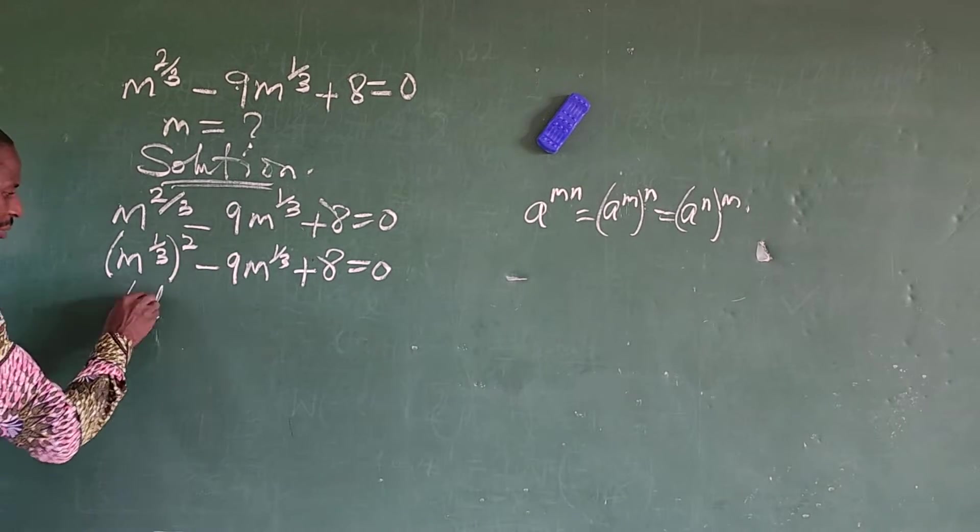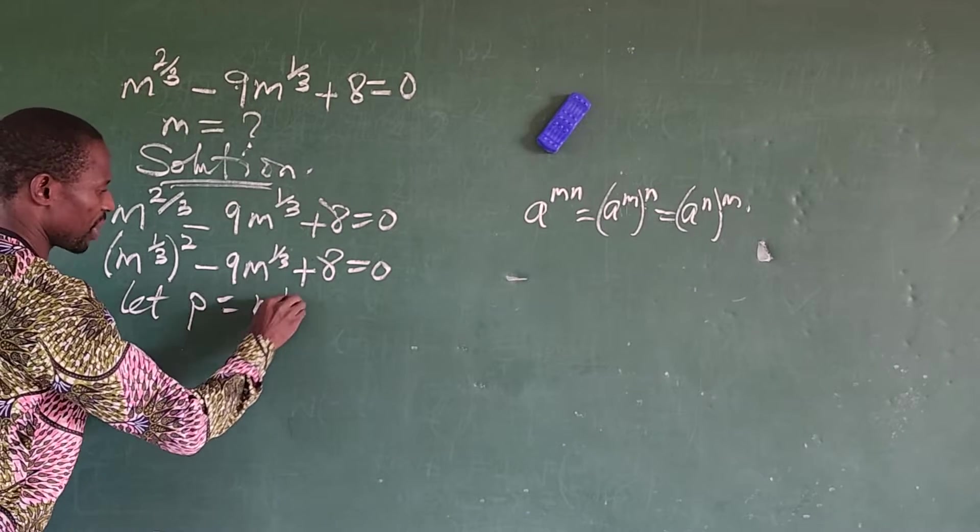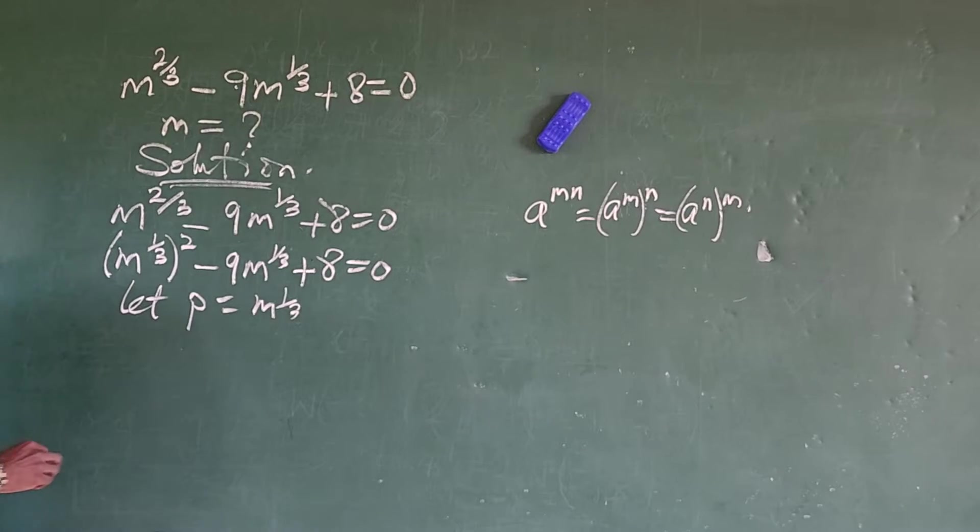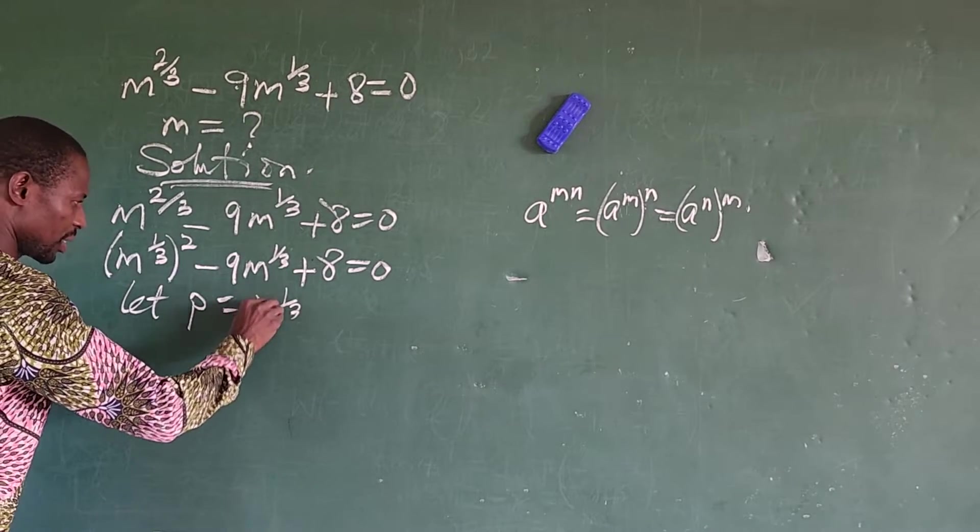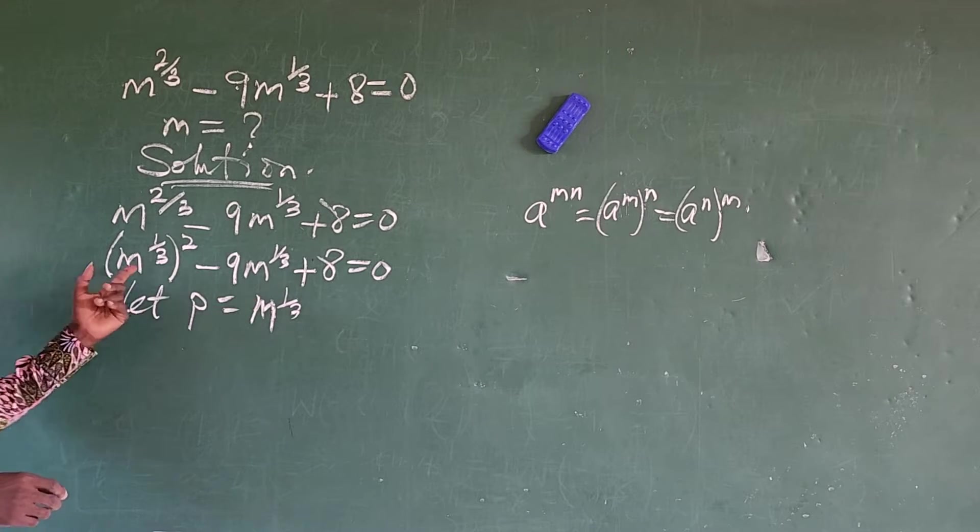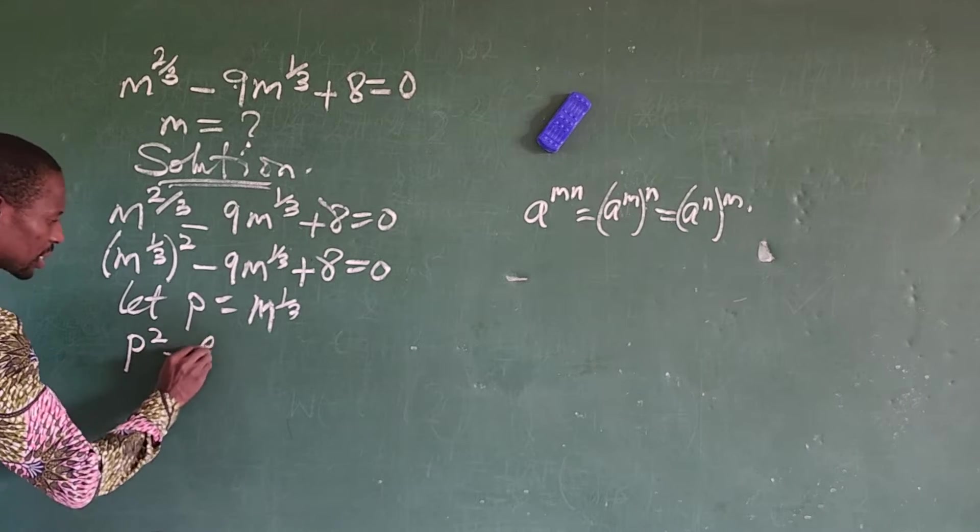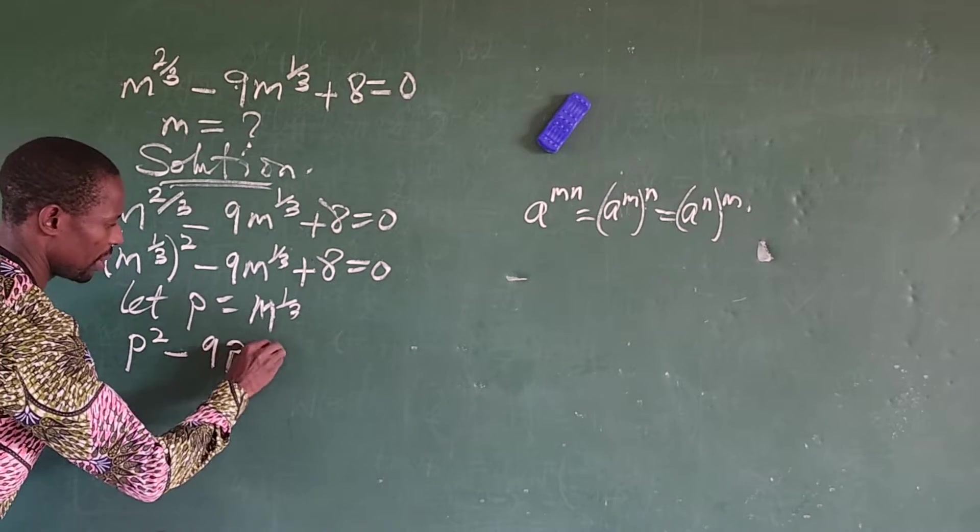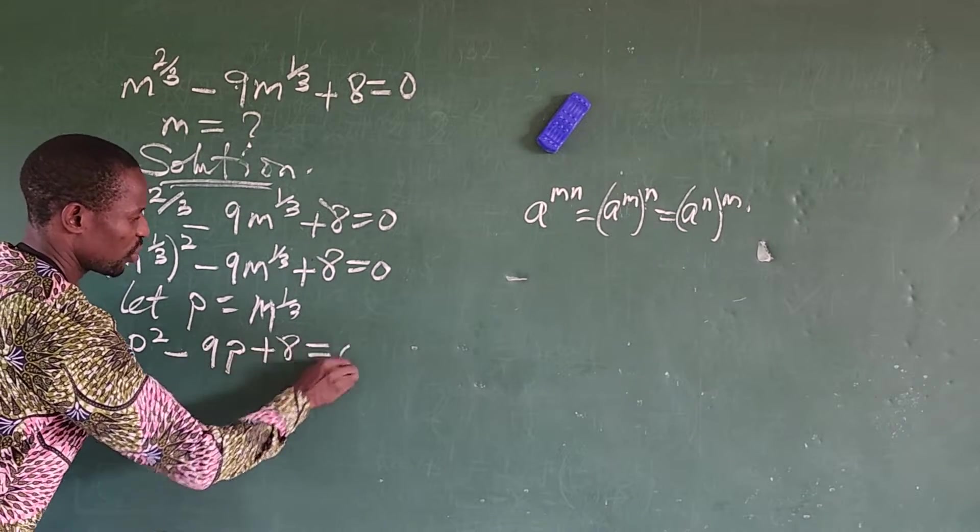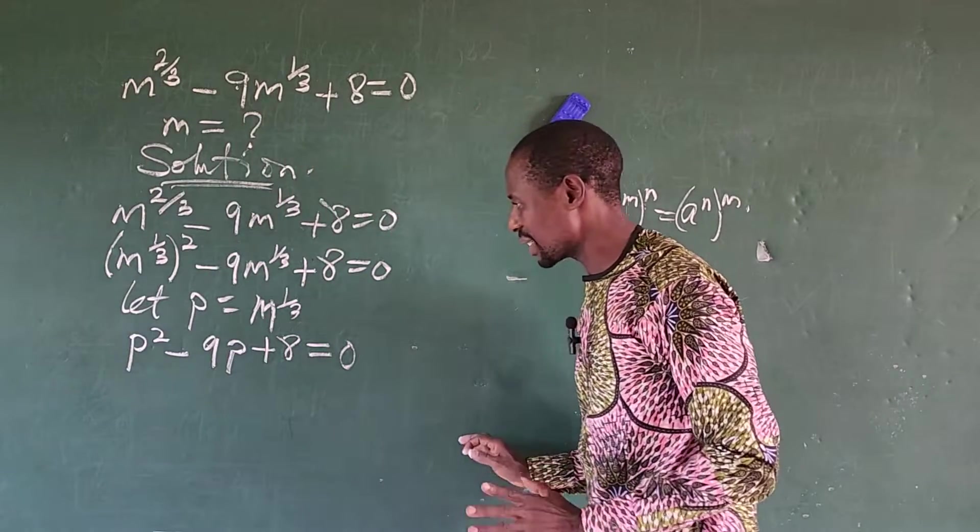Now if I use this to multiply this, it gives me this back. So at this point, we are having m to the power of 1 over 3 and m to the power of 1 over 3. So we can now say let p equal to m to the power of 1 over 3. Now wherever we see m to the power of 1 over 3, let's put p there.